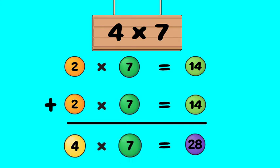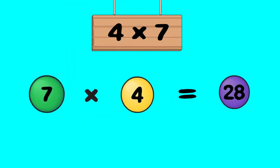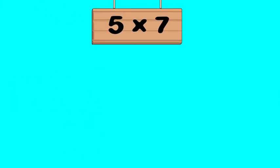Now use the commutative property. See, seven times four is also twenty-eight. How about five times seven?